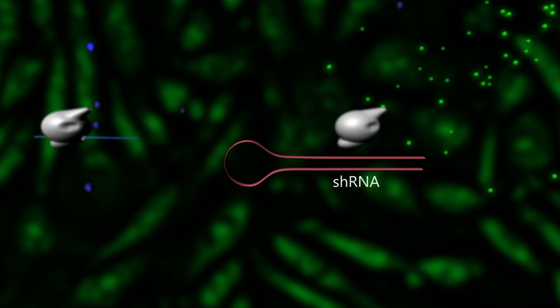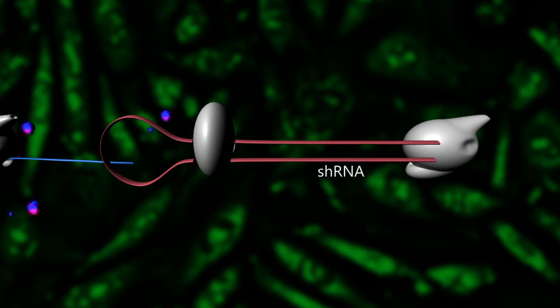In order to function as a regulator, its head is first cleaved off, then the resulting double-stranded siRNA binds an argonaut to form an RNA-induced silencing complex, or RISC.